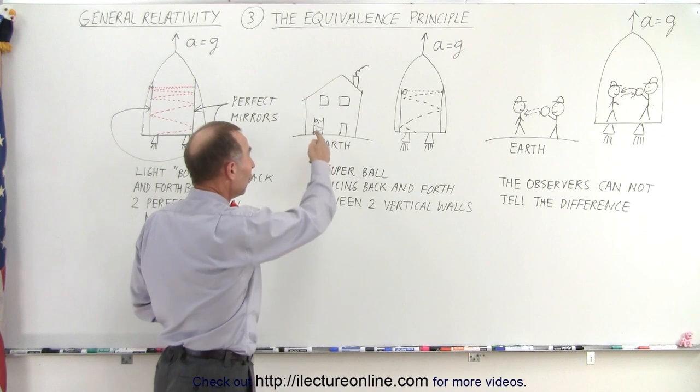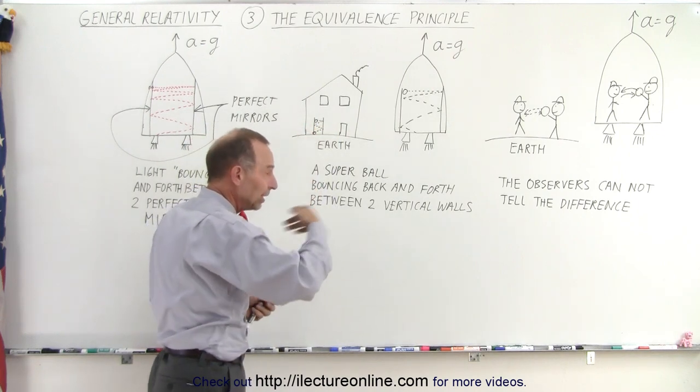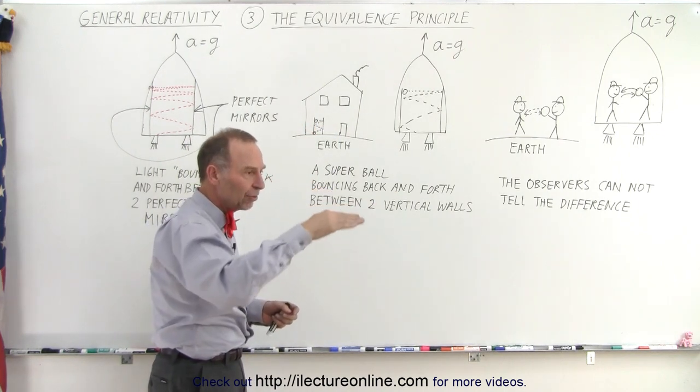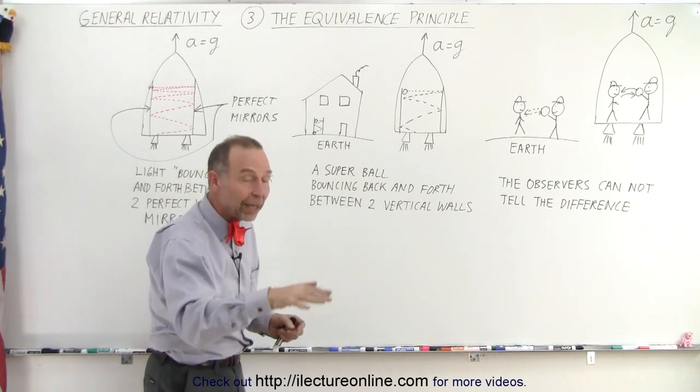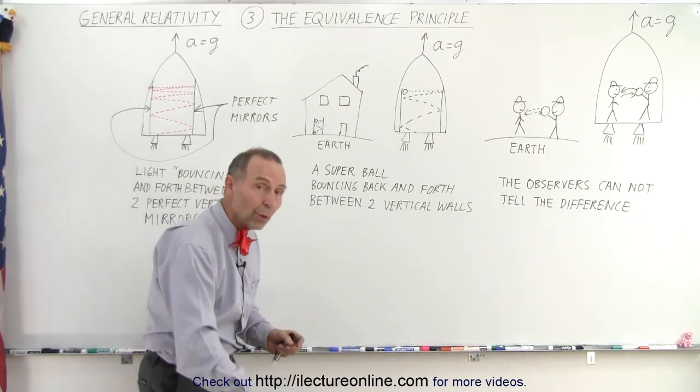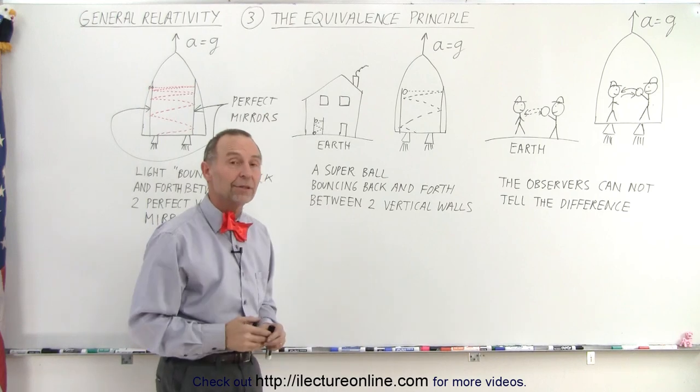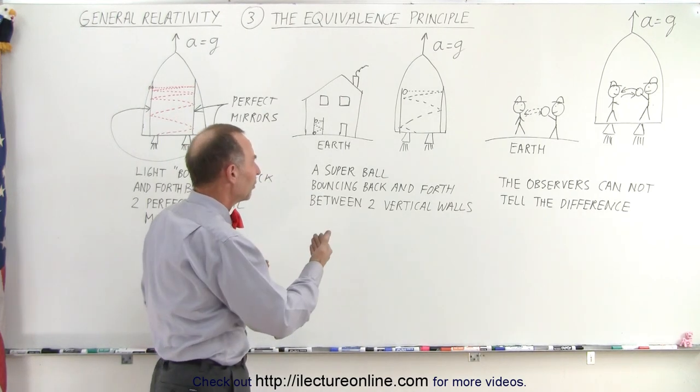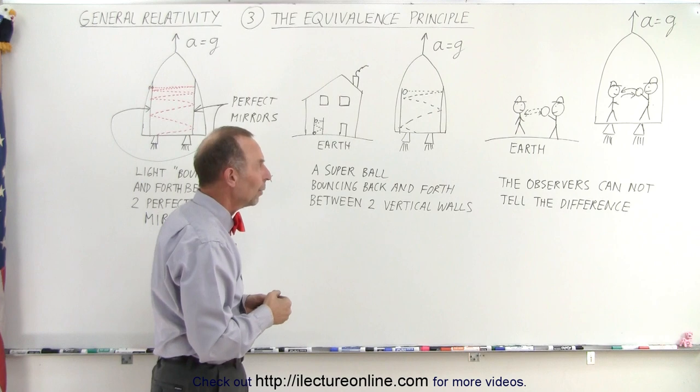So, you can imagine the game where you throw a super ball back and forth and it would bounce back, but in subsequent travels across the hallway, the ball would fall more and more each time and eventually the ball would hit the ground because the ball, of course, is accelerating towards the earth.